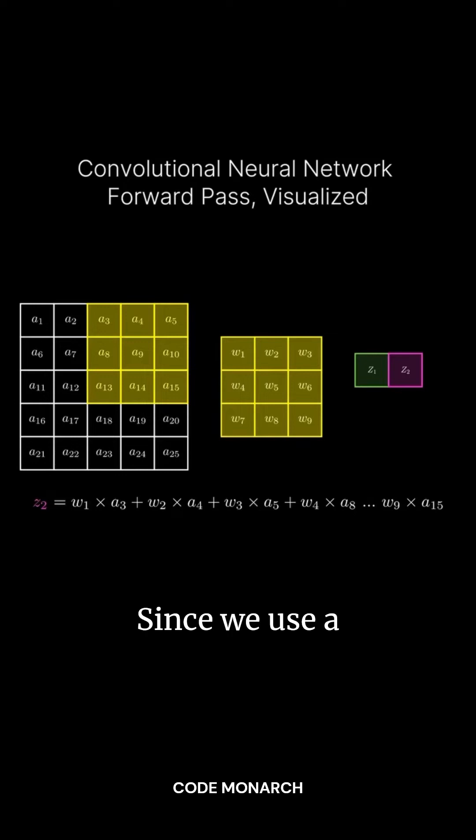This gives us Z2. Since we use a stride of 2, we move the kernel two steps at a time. We combine Z2 with Z1 to form part of our feature map.